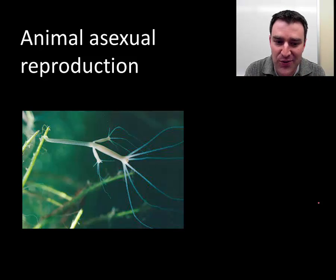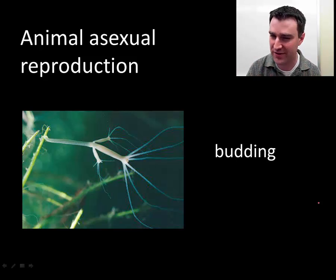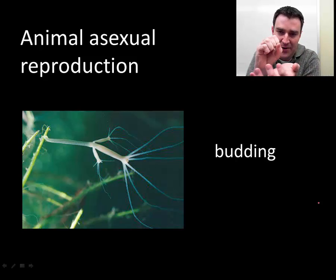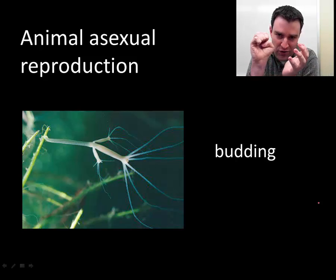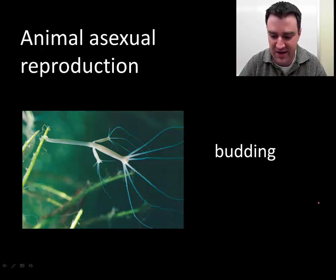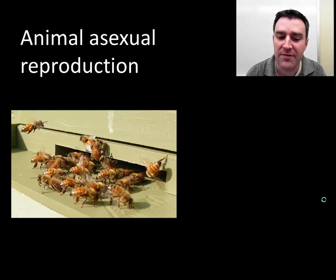Sort of the animal equivalent of vegetative reproduction is budding. Budding is the idea that very simple animals like hydra might be able to produce offspring that start as a little bud coming off of them — a growth that eventually develops, pops off, and becomes a separate genetic clone offspring.